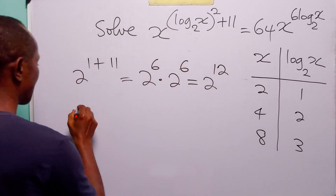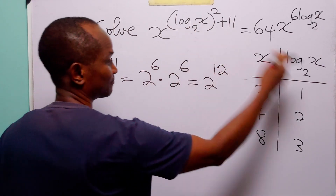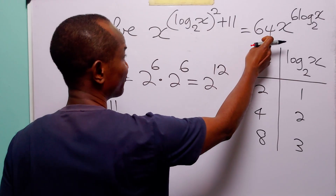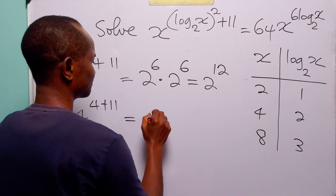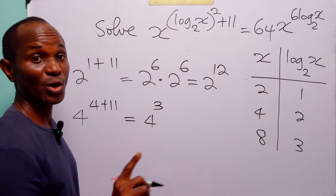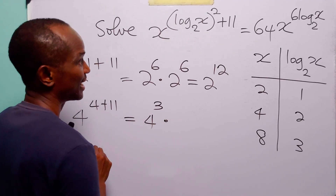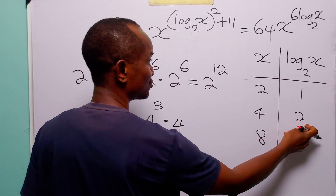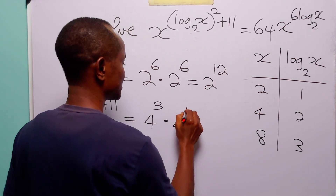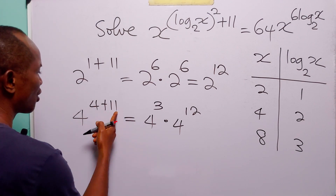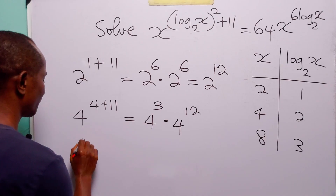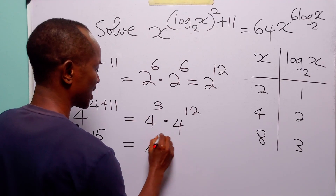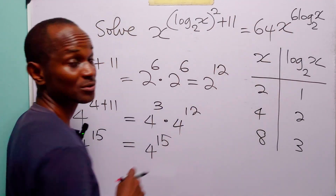When x equals 4, we have 4 to the power of 2 squared plus 11 equals 4 to the power 4 plus 11. On the right, 64 equals 4 to the power 3, since 64 is 4 times 4 times 4. Log to base 2 of x when x equals 4 is 2, and 6 times 2 is 12. So 4 plus 11 is 15, giving 4 to the power 15. Adding 3 and 12 also gives 4 to the power 15. Left-hand side equals right-hand side.